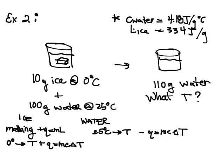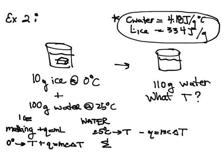C is the specific heat of water and L is the latent heat of ice. To find the final temperature, I use sigma Q = 0 and add up all the individual heats: Q_melt, plus Q for the melted ice warming from zero to T, plus Q for the original water going from 25 to T — and those three things must equal zero.